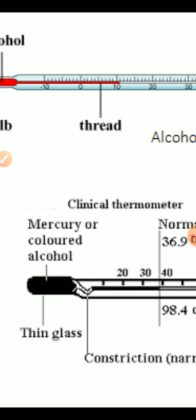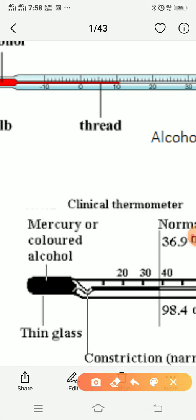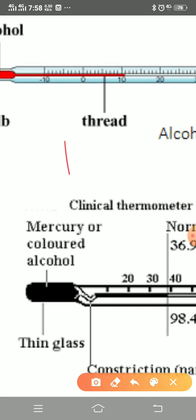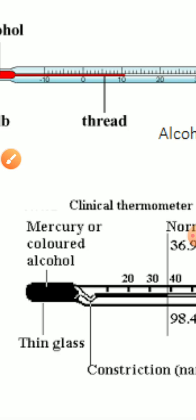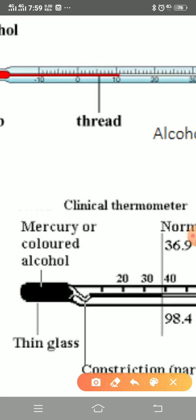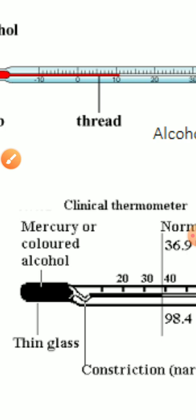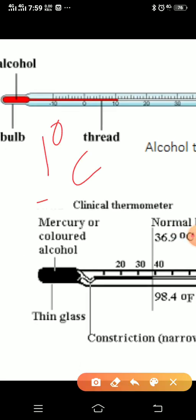Now first we have to find out how many degrees Celsius each division measures. From minus 10 to zero, we need to find each division's value. We can find this by measuring the divisions between two consecutive markings. From 0 to 10, there are 10 divisions, so 10 divided by 10 gives 1 degree Celsius. Each division measures 1 degree Celsius.